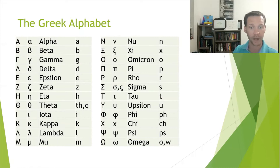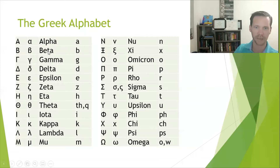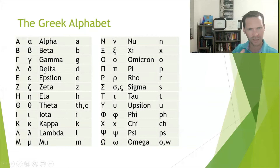I'd recommend learning the letters in groups: learn alpha, beta, gamma, delta, epsilon together first. Then zeta, eta, theta — they rhyme, so learn those together. Then iota, kappa, lambda, mu all go nice and easy. Notice how closely the Greek alphabet follows the English alphabet: A, B, then gamma like G, D, E — and then I, K, L, M, N tend to follow. This makes sense because English is ultimately based on the Greek alphabet.